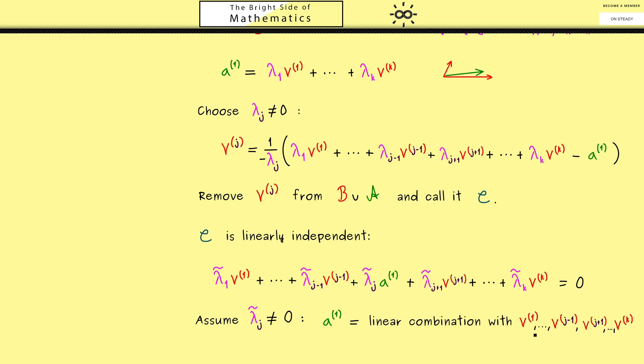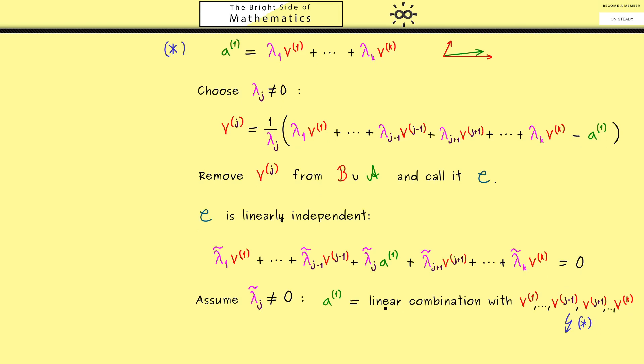However, now without the vector v^(j). And this can't be, because the linear combination from above was uniquely given. Hence, we could say this contradicts the statement from above. Essentially, what you should see here is that the vector v^(j) was crucial for the linear combination of a^(1). Hence, we conclude that this coefficient for a^(1) is 0.